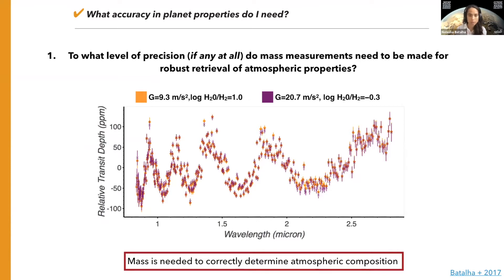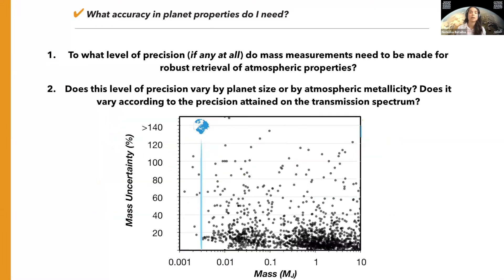So you get these degenerate solutions. Here are two different planet cases: one is rich in water with a low gravity, and the other is sparse in water with a high gravity. Their spectra are observationally identical. So mass is definitely needed at some level to correctly determine what the composition of atmospheres are, but we still don't know how well, or if this level of precision needed varies as a function of planet size or atmospheric properties.